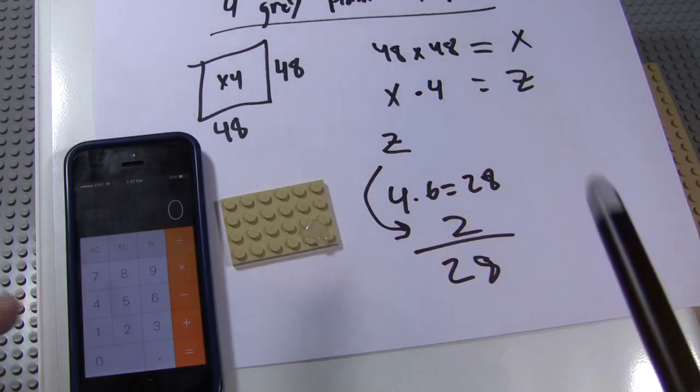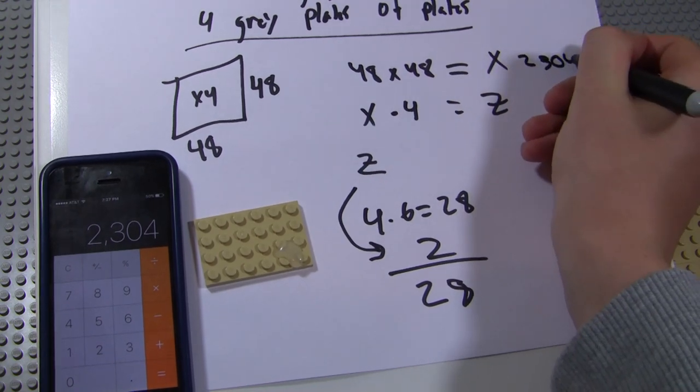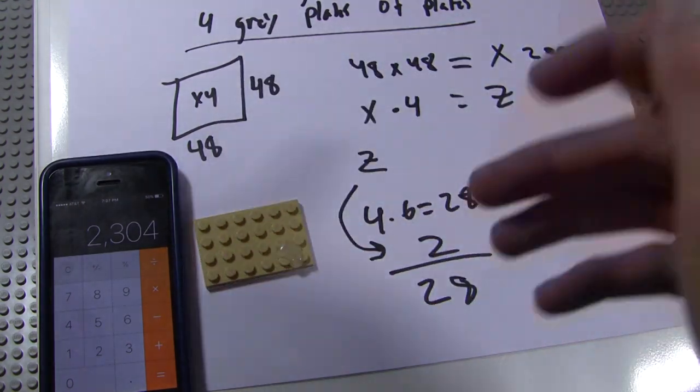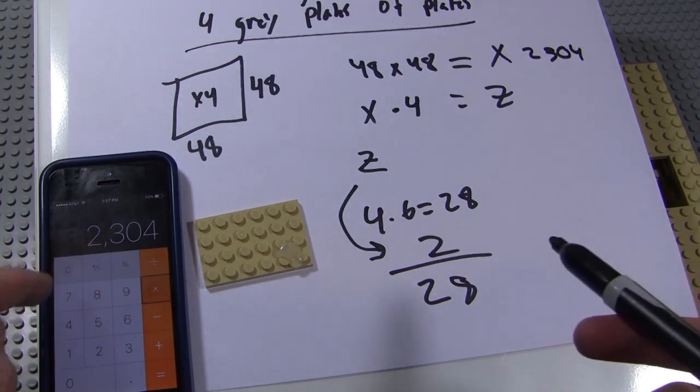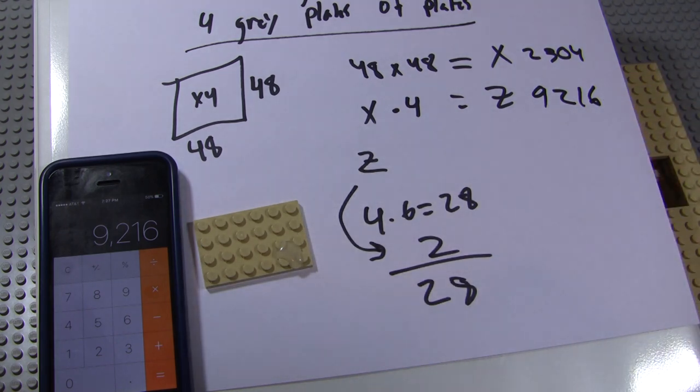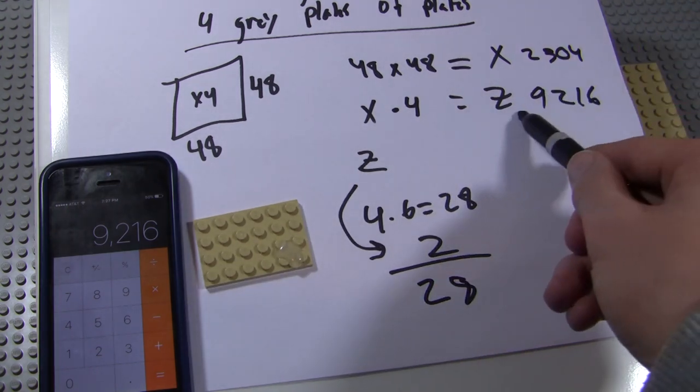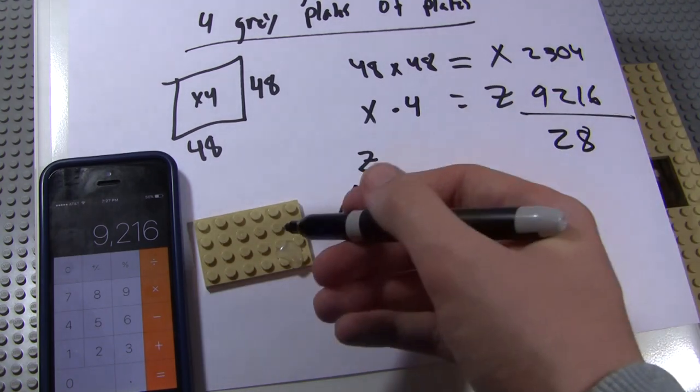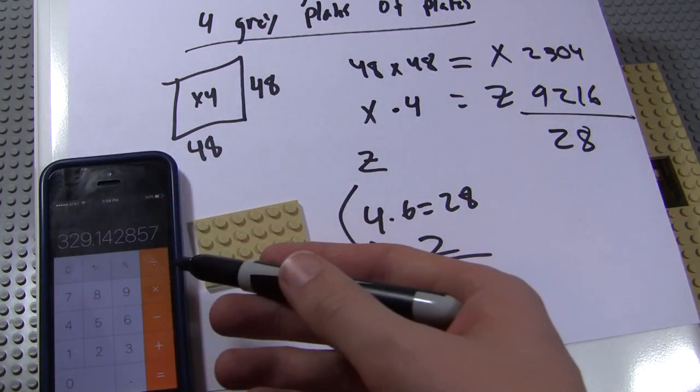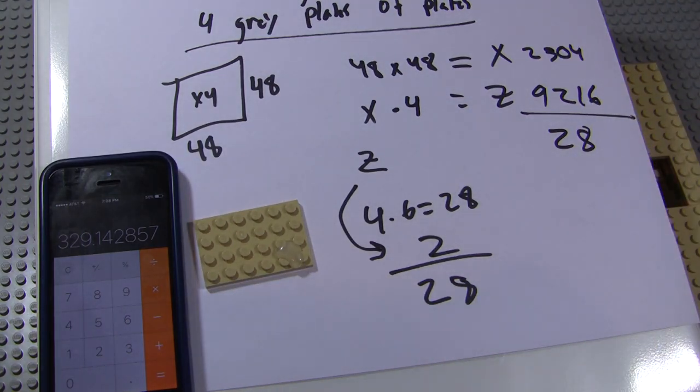Okay guys. So let's go back to our math. So we do 48 times 48. That gets us 2,304. Let me just do that again just to make sure we're right. 48 times 48. So that's how many studs are on one gray base plate. And then we take our number and times that by 4. So that's 9,216. So that's how many studs we need of tan plates in theory, roughly.